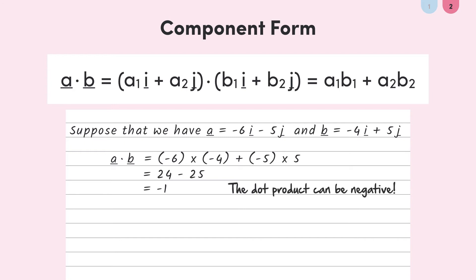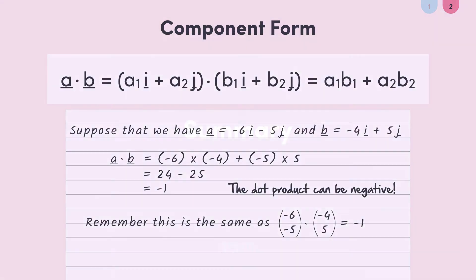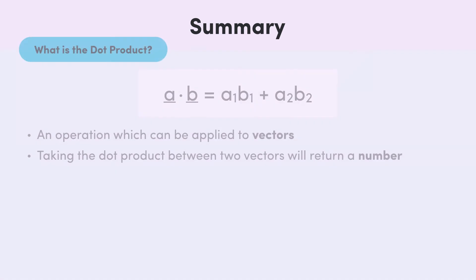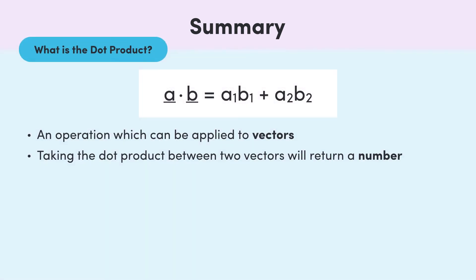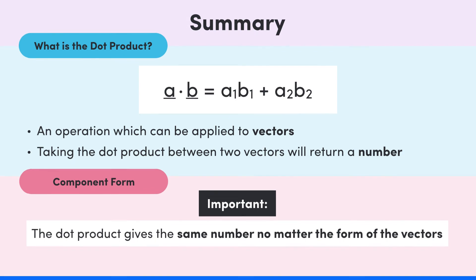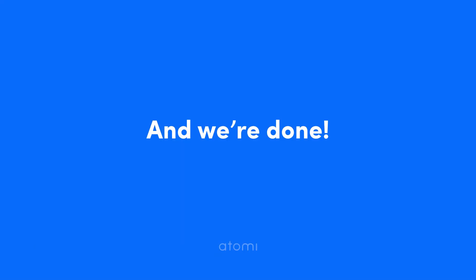Remember, although the column vector form and component form look different, when we take the dot product between two vectors in either form, the resulting answer will be the same number. We learned today that the dot product is a multiplication of sorts between two vectors but has a unique definition. Taking the dot product of two vectors results in a number, and this holds whether vectors are in column or component form. Get plenty of practice taking the dot product between vectors.